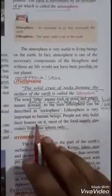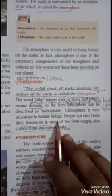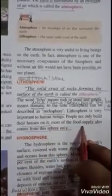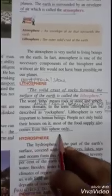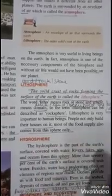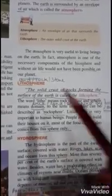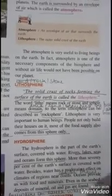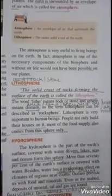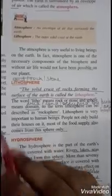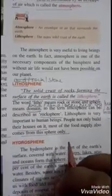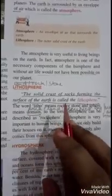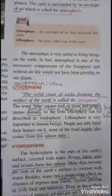Lithosphere is very important to human beings. People not only build their houses on it — most of the food supply also comes from this sphere. As I told you, lithos means land, so on land human beings develop houses, buildings, and bridges. Lithosphere is all about land — the solid crust of rocks.